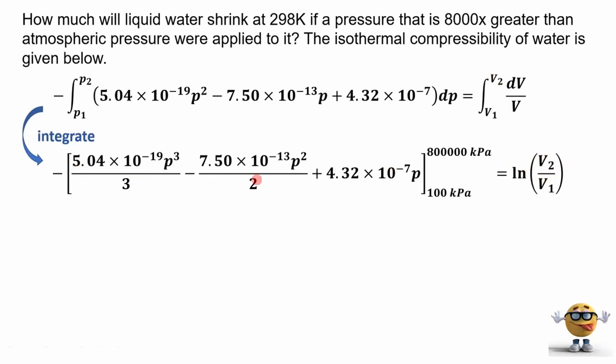Okie dokie. So if we plug this into our calculator, like this at 800,000 minus this number at 100,000 kPa, we should get negative 0.10559 equals this ln V2 over V1.